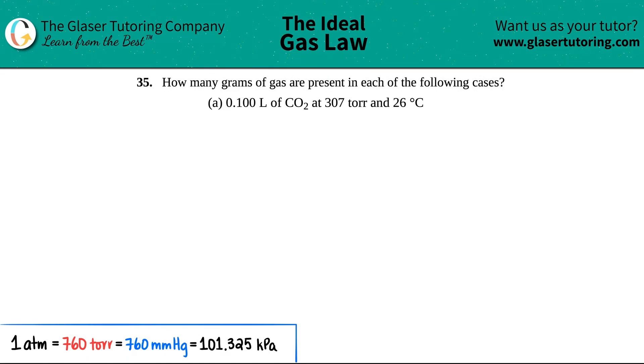Number 35: How many grams of gas are present in each of the following cases? In this case we have to find out how many grams of gas are present in 0.1 liters of CO2 at 307 torr and 26 degrees Celsius. We're dealing with a volume, they gave us pressure, and temperature.